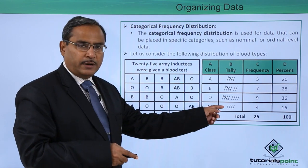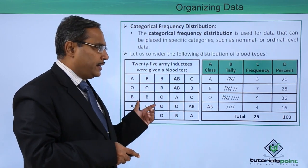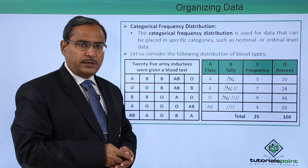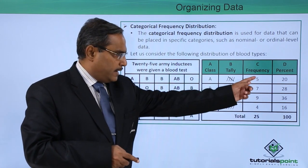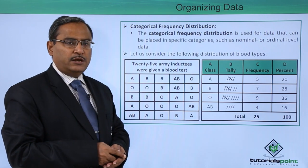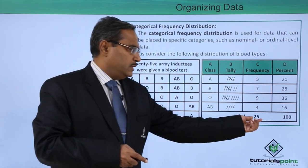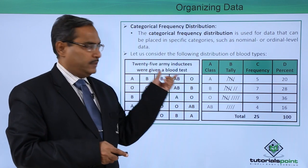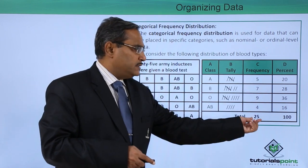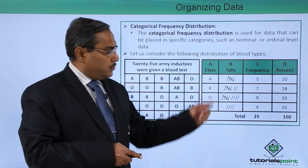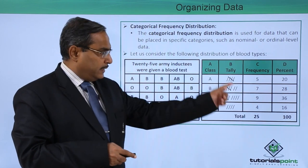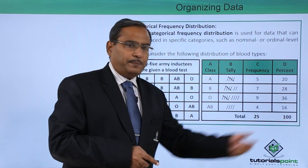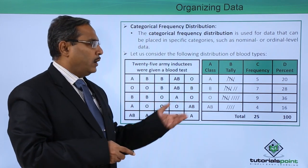Respective tally marks: how many times is A appearing? How many times is B appearing here? Then the respective frequencies we have expressed in the form of integers, and the percentage frequency we are calculating. This 25 is the total frequency because we are having 25 army inductees. This 5 out of 25 is 20 percent. In this way, the respective percentage frequency also we have calculated, and obviously, the sum of the percentage frequency will be 100.